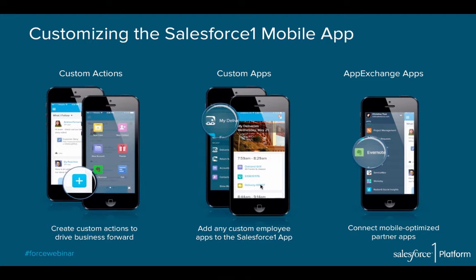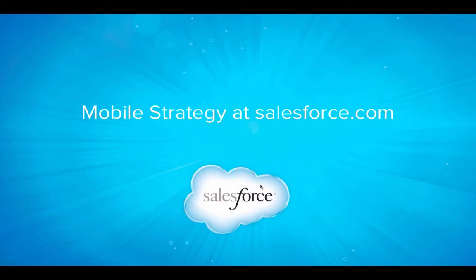There are three main ways to customize the Salesforce One mobile app and really make it your own. One is through custom actions — that's the publisher on screen — which is really your way to drive business forward within the mobile app, whether you're creating a new lead when you're in line at the coffee shop or updating the status of a case in a customer's parking lot. Second are your custom apps — you can take those awesome Visualforce apps and make them mobile. Third are AppExchange apps — we have about 75 to 80 partners who have already made their apps mobile and you can easily install them right inside your Salesforce implementation.